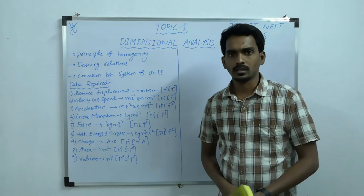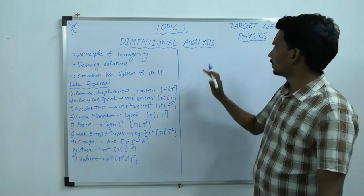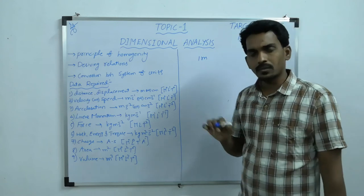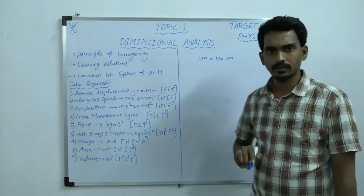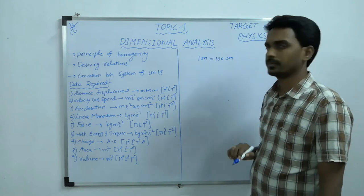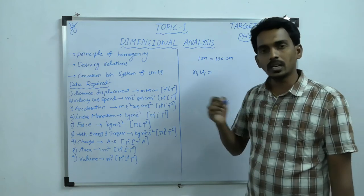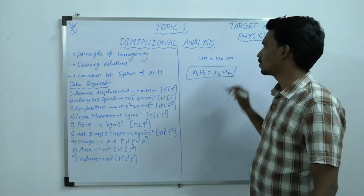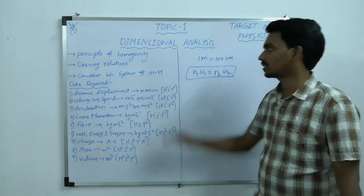The last one is conversion between different system of units. Suppose the length of an object is 1 meter in the SI system; in CGS it becomes 100 centimeters. Here N1 is the numerical value in SI and U1 is the unit; N2 is the numerical value in CGS and U2 is the unit. So N1·U1 = N2·U2. Using this formula you can solve conversion questions.